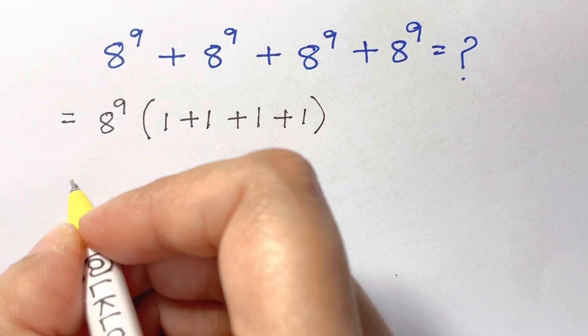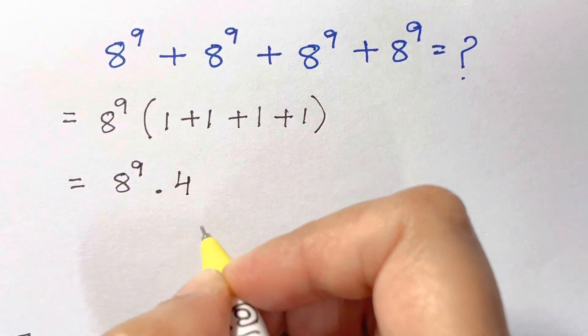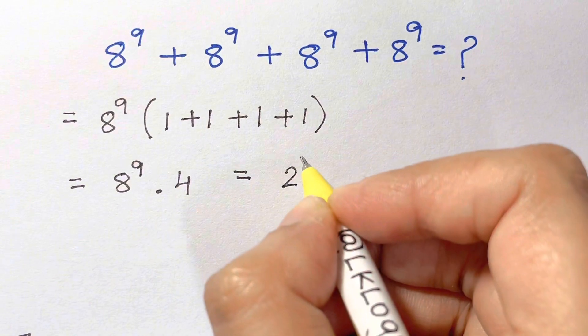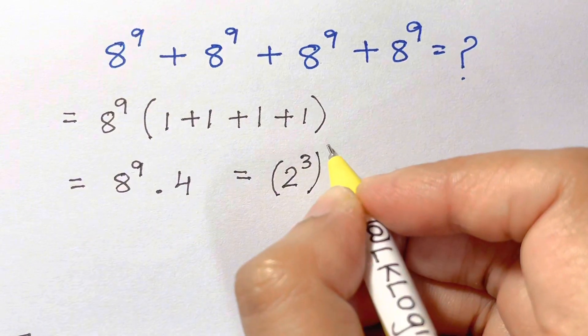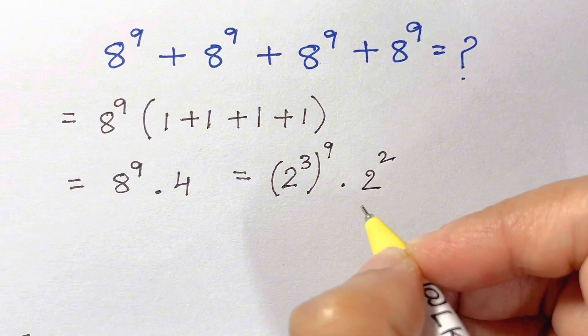So we have 8 to the power of 9 times 4 and now you can write 8 as 2 cubed, so we'll have 2 cubed whole to the power of 9 and 4 can be written as 2 squared.